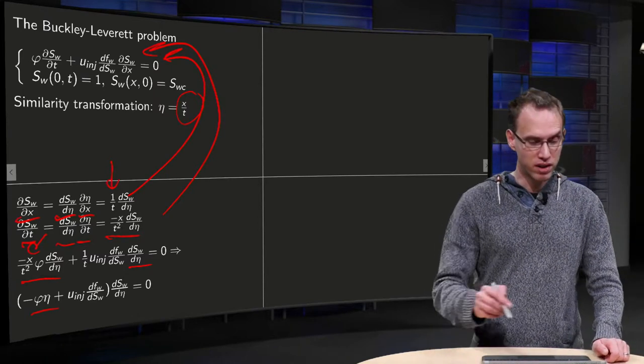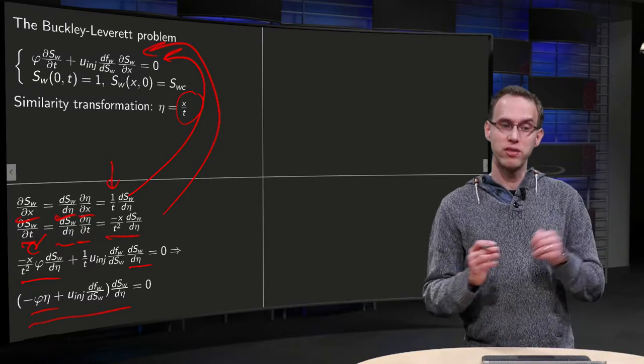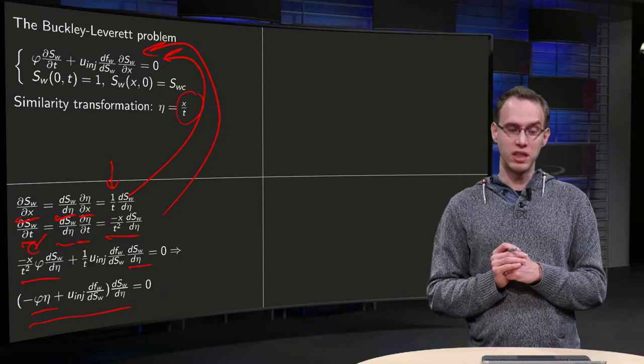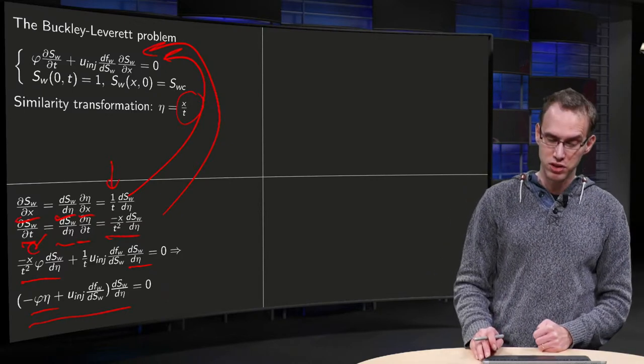So we can factor out ∂Sw/∂η, and we get the ODE: minus φ times η plus u inject times dfw/dSw times ∂Sw/∂η equals zero.